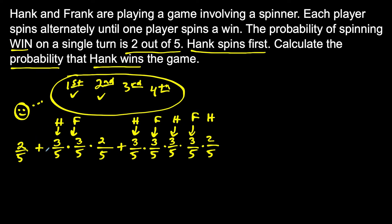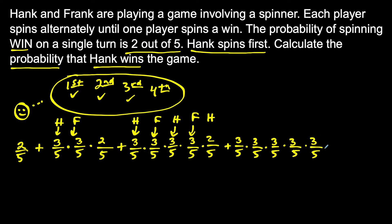We can start to see the trend. For Hank to win on the fourth spin, there's a three out of five chance he doesn't win on the first spin, then Frank doesn't win — three out of five. Second round: three out of five Hank doesn't win, three out of five Frank doesn't win. Third round: three out of five Hank doesn't win, three out of five Frank doesn't win. Then the fourth round: two out of five chance. This pattern will continue.